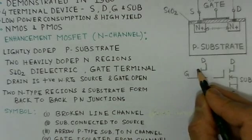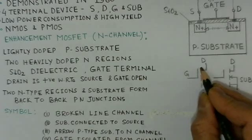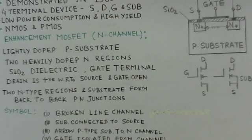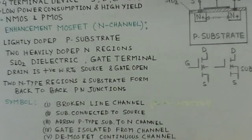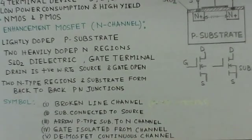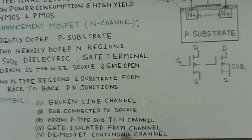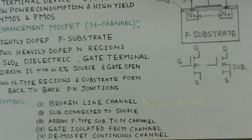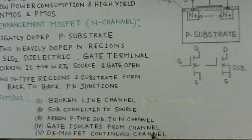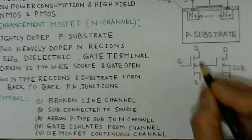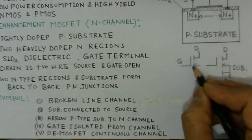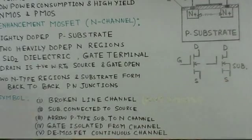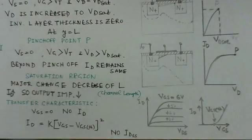We can observe that the gate is isolated from the channel — this is the channel and this is the gate, they are isolated. Therefore it is an insulated gate. The depletion MOSFETs, on the other hand, have a continuous channel. That means depletion MOSFETs do not have a discrete channel; they have a continuous channel. That is the only change in the symbol of depletion MOSFETs.